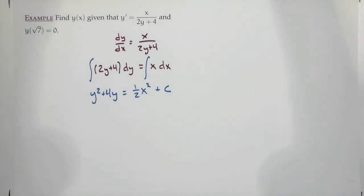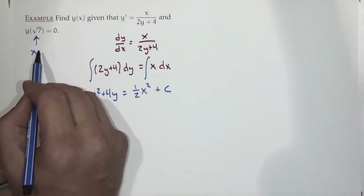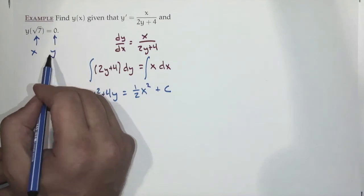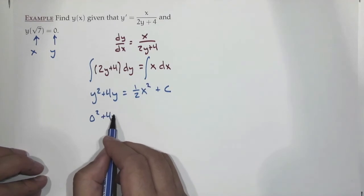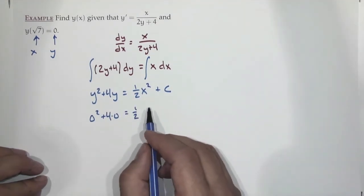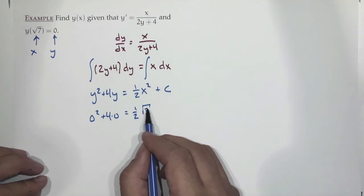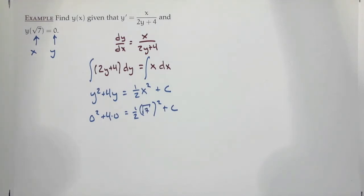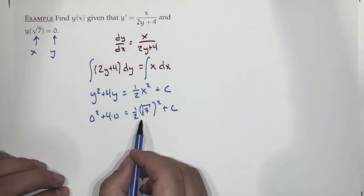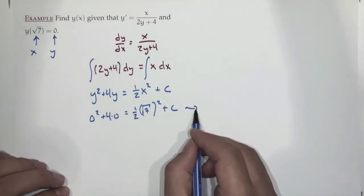Let's solve for C. Plug in x=√7, y=0: 0² + 4(0) = (1/2)(√7)² + C, so 0 = 7/2 + C, giving C = −7/2. So y²+4y = (1/2)x² − 7/2.